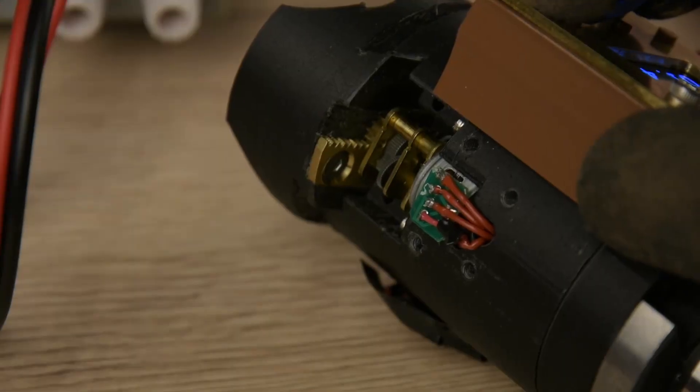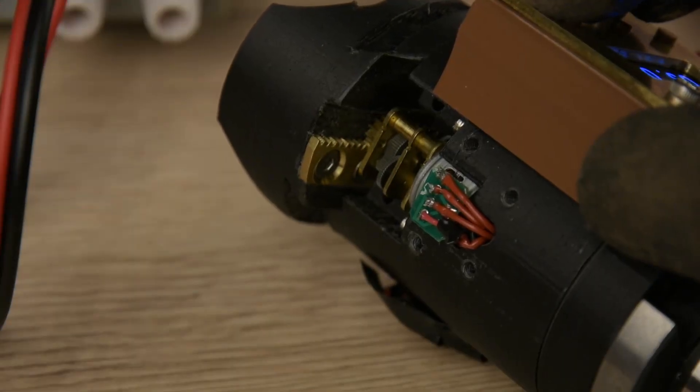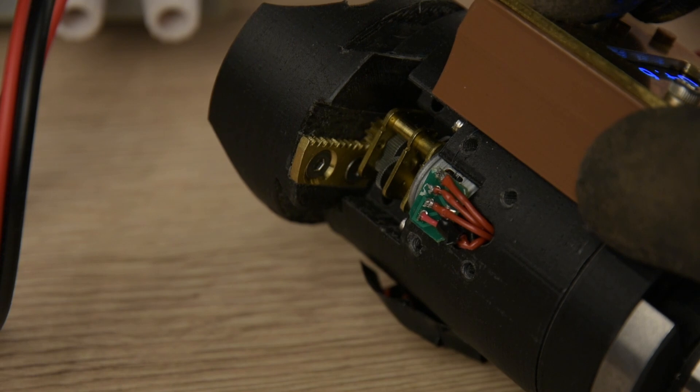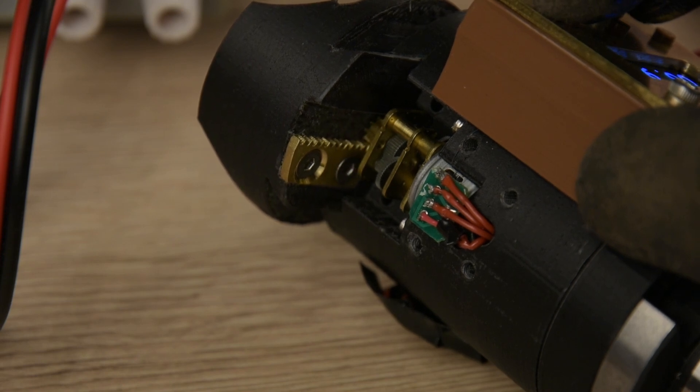The only thing left to do now before I machine the main parts out of metal is to make a little gear rack so the motor can move the top part of the boring head.